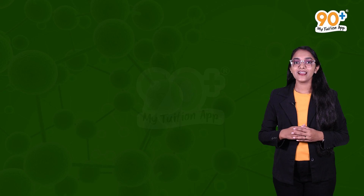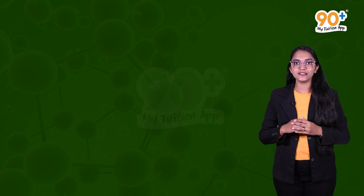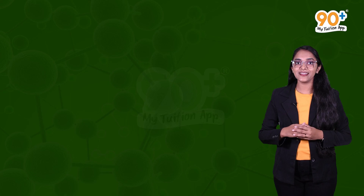Rule three: if handwritten, both words are underlined separately; if printed, they are in italics. Rule four: the first letter of the generic name starts with a capital letter, and the first letter of the specific epithet starts with a small letter.